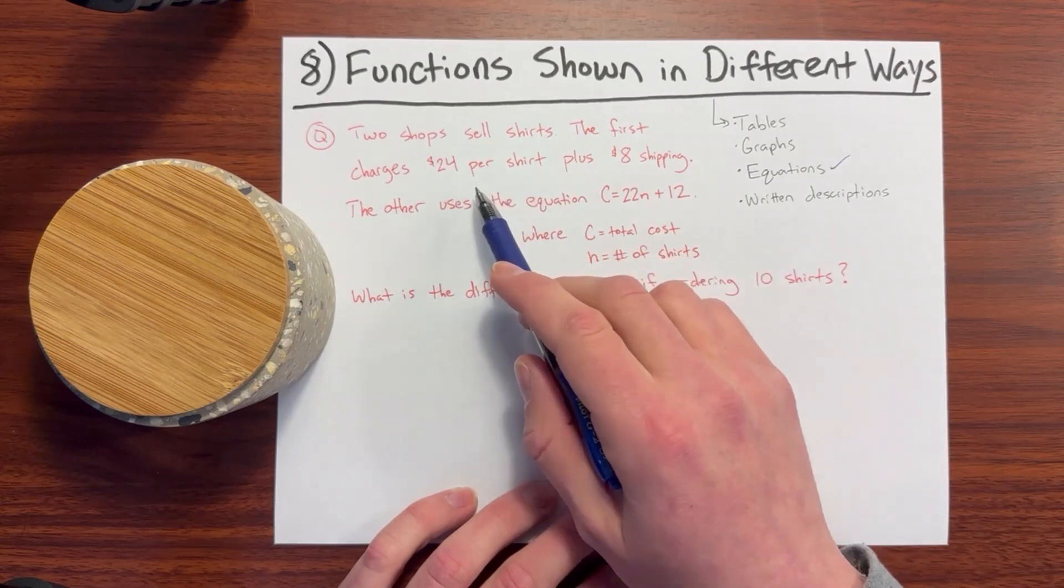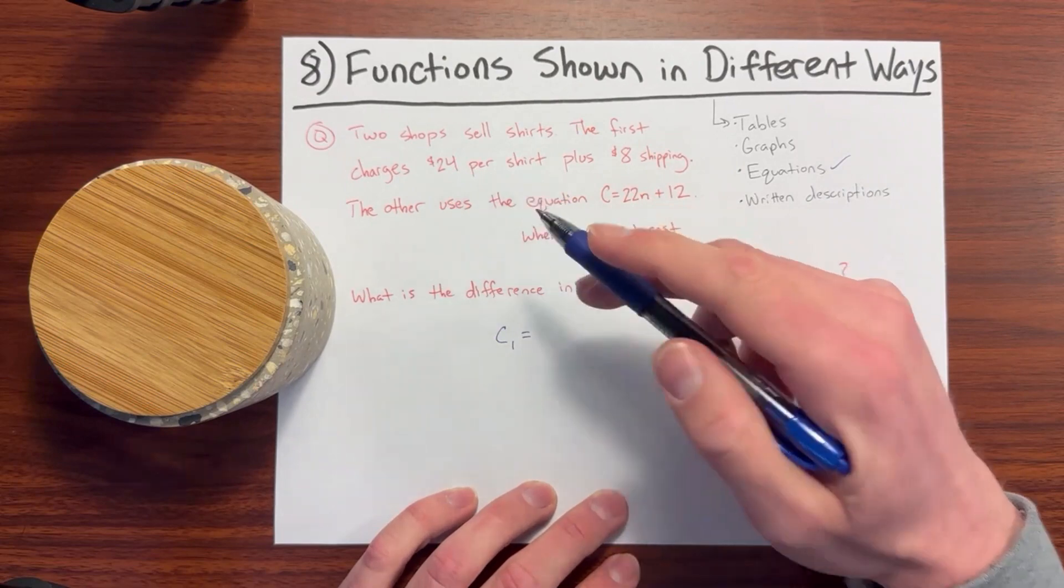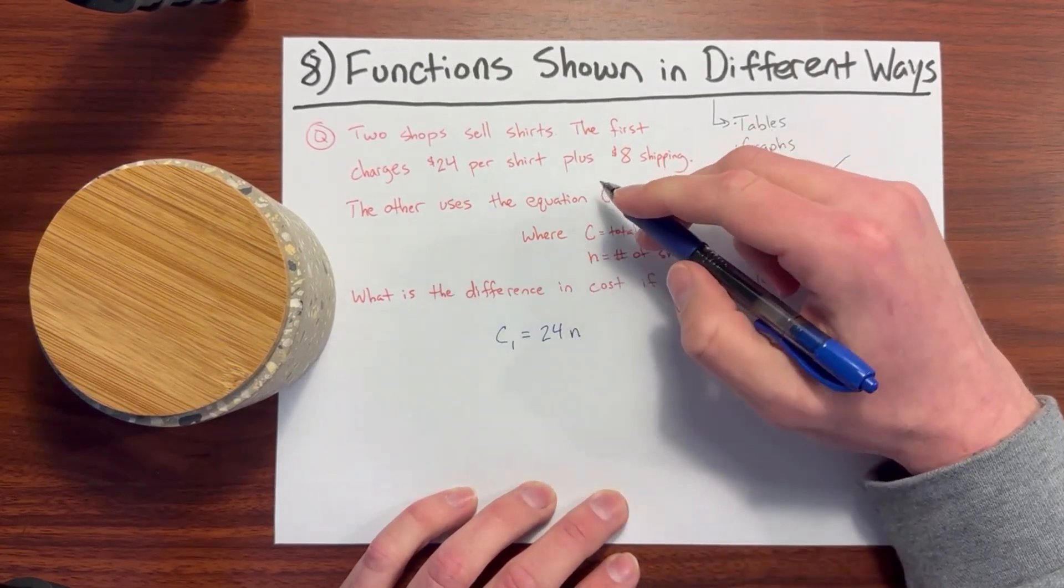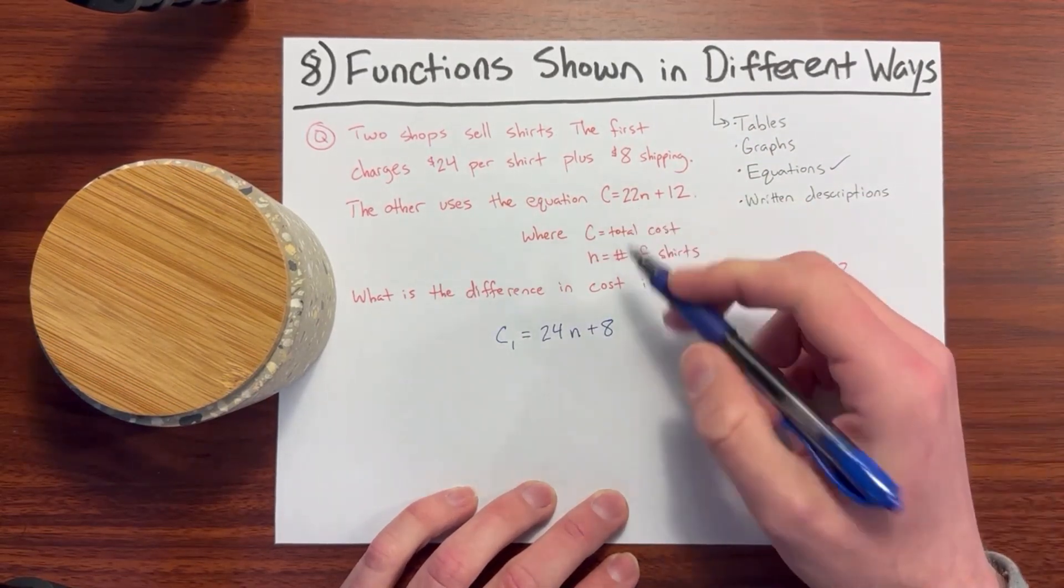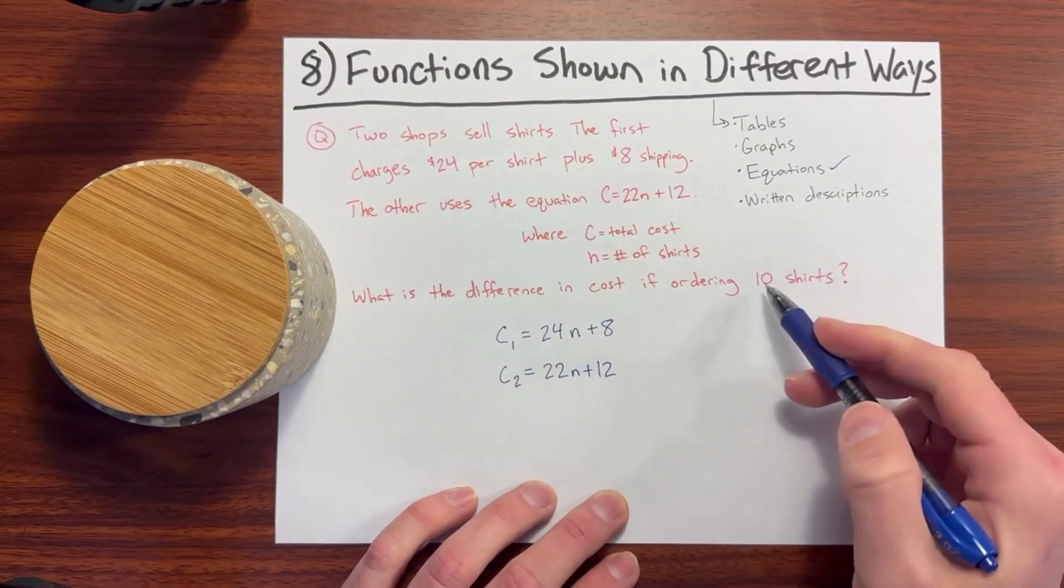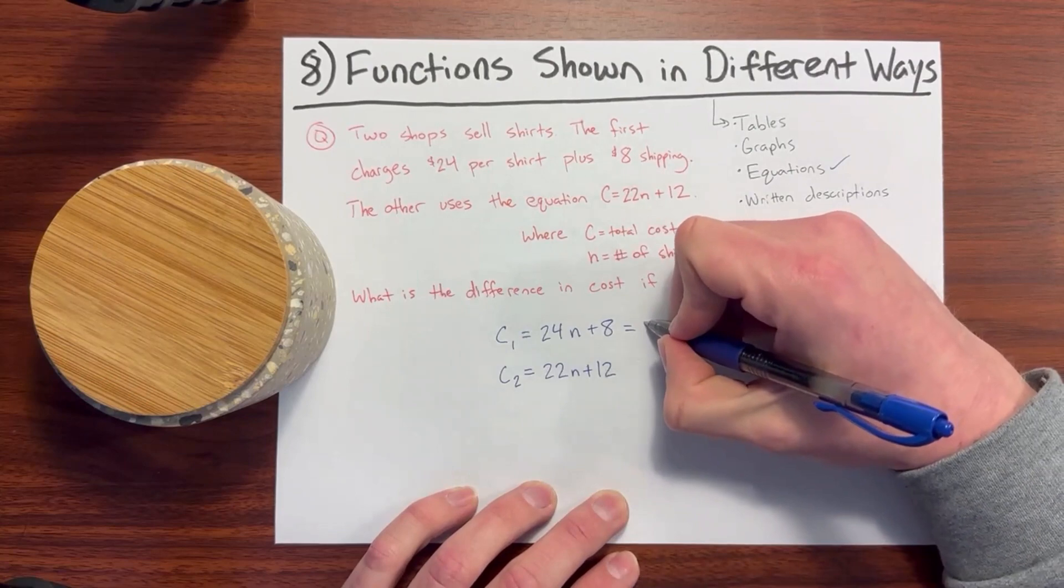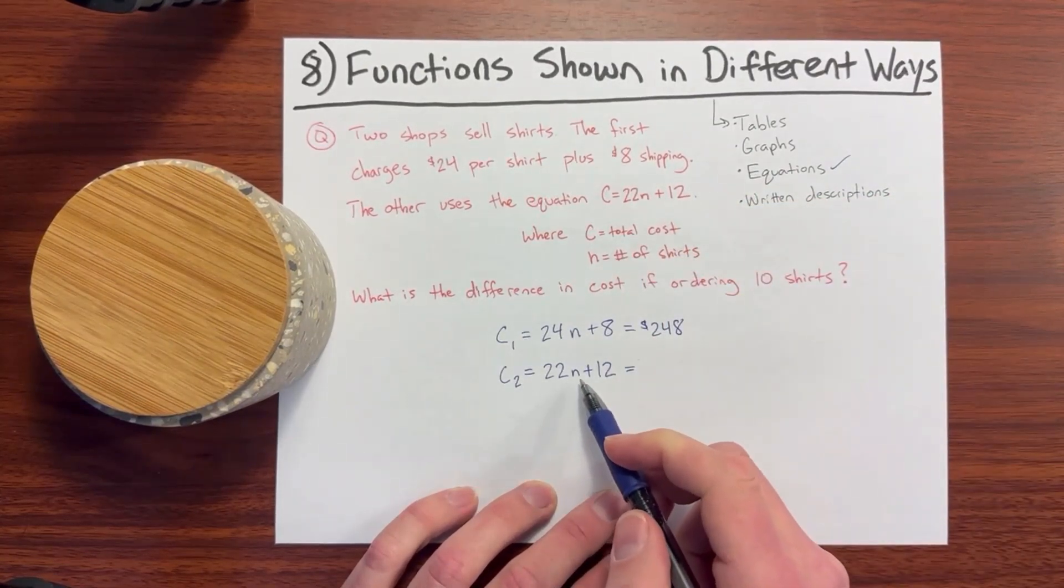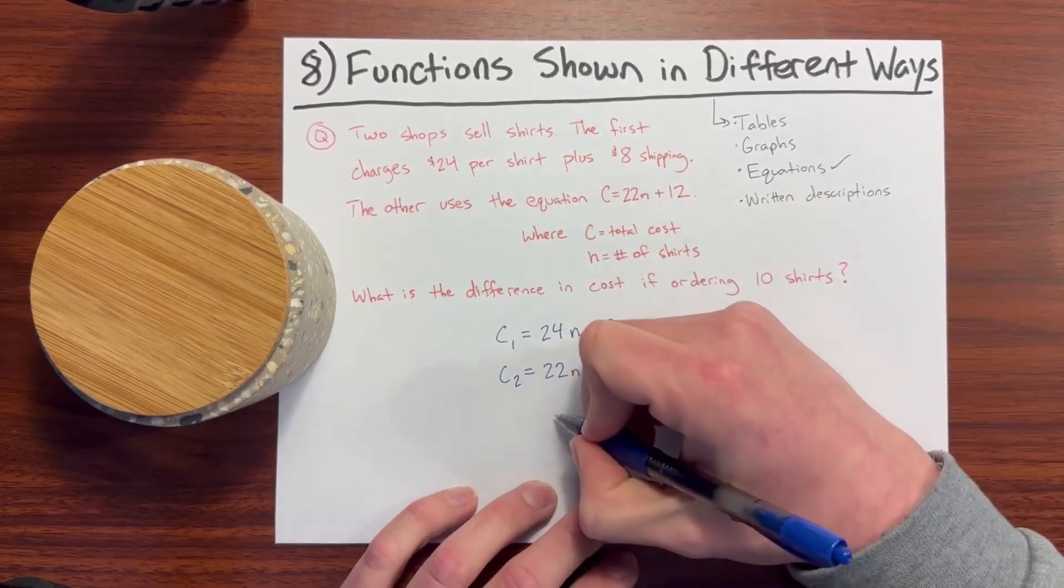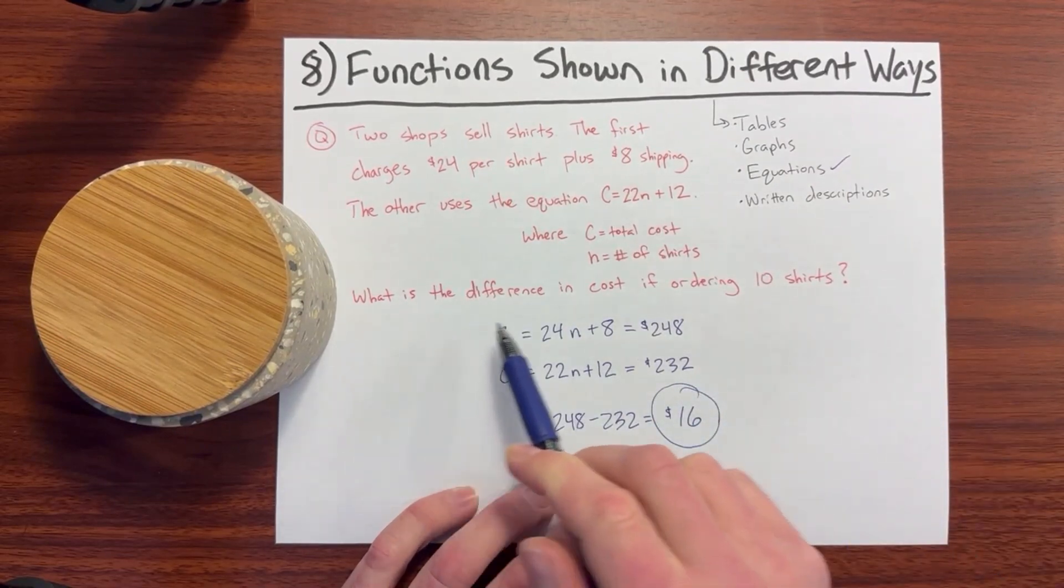We will convert the first shop's charges into an equation similar to the second shop's. I will call that C1 is equal to, well they have $24 per shirt. If we follow the other equation, we will call the number of shirts N. And then we have $8 for shipping added on. We are already given the equation for the second shop, which I will call C2. That is 22N plus 12. If ordering 10 shirts, we will plug in 10 for the N. So for C1, we will have 24 times 10. So 240 plus 8, $248 for the first shop. For the second shop, we will have 22 times 10. So 220 plus 12 or 232. Then we will subtract 248 from 232 to get $16 being the final answer of the difference in cost.